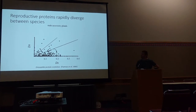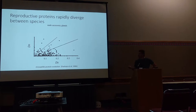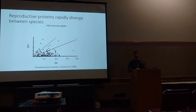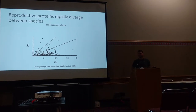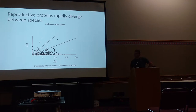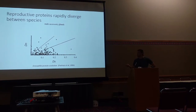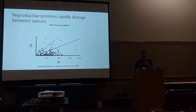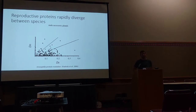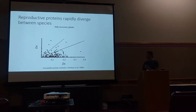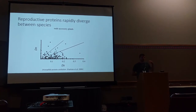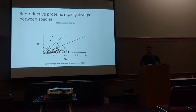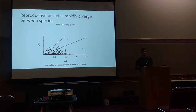Talking about reproductive proteins and molecular evolution might make you think of a classic figure. We see time and again in animals that reproductive proteins tend to diverge more quickly than the genomic background, as evidenced by a higher rate of non-synonymous substitution. A lot of times when we see this result, it's implicitly or explicitly implied that this is due to selection — sexual conflict or something about speciation — and that this rate of non-synonymous change is driven by adaptation and positive selection.